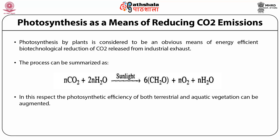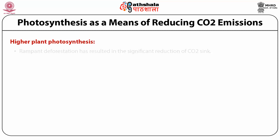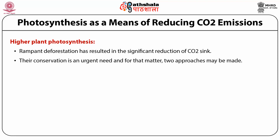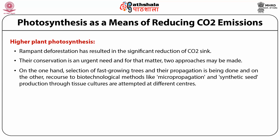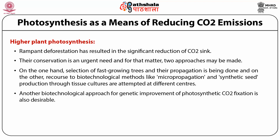In this respect, the photosynthetic efficiency of both terrestrial and aquatic vegetation can be augmented. Regarding higher plant photosynthesis, rampant deforestation has resulted in significant reduction of the carbon dioxide sink. It has been estimated that about 1% of tropical rainforests are getting diminished every year. Their conservation is an urgent need, and two approaches may be made: selection of fast-growing trees and their propagation, and recourse to biotechnological methods like micropropagation and synthetic seed production through tissue cultures.